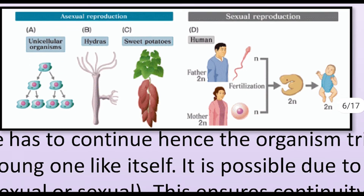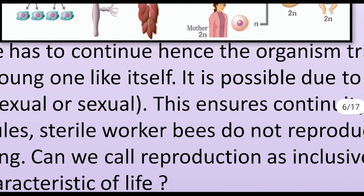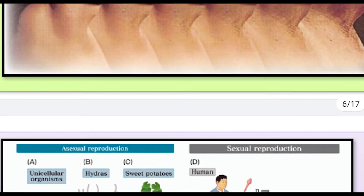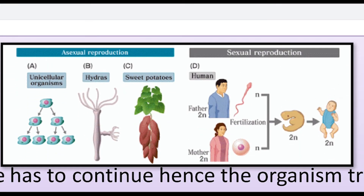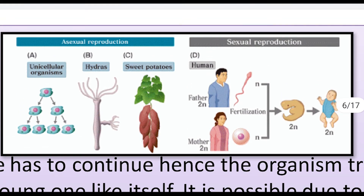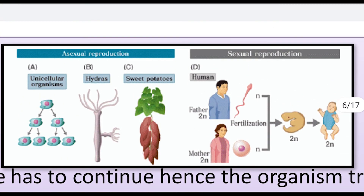The aging process occurs as organ systems lose effective working capacity over time. Life has to continue, so organisms try to produce young ones through reproduction. In the case of amoeba, hydra, and sweet potato, asexual reproduction is observed. In humans and many other animals, sexual reproduction takes place. This ensures the continuity of life — the perpetuation of the species.